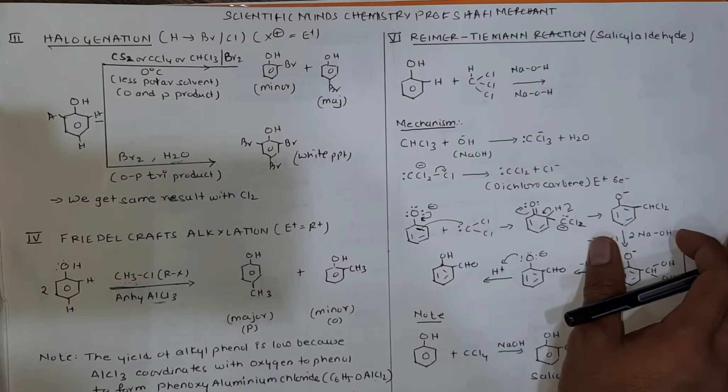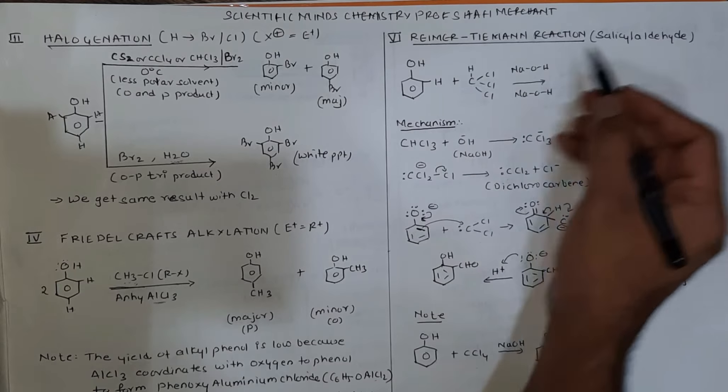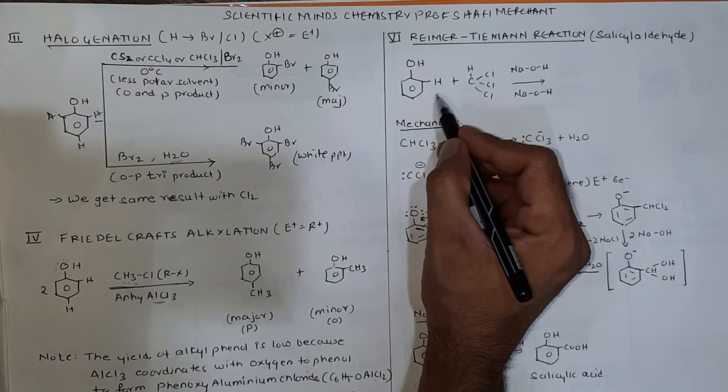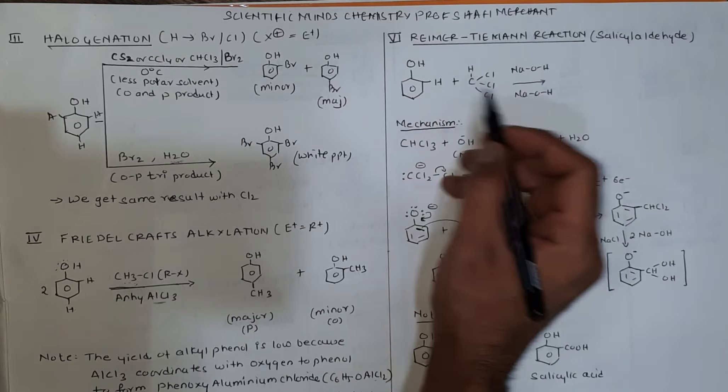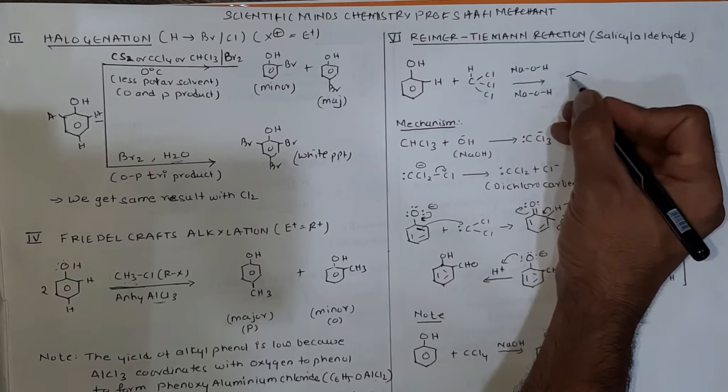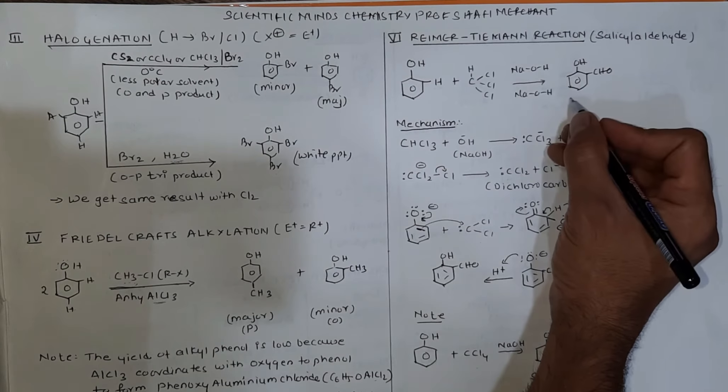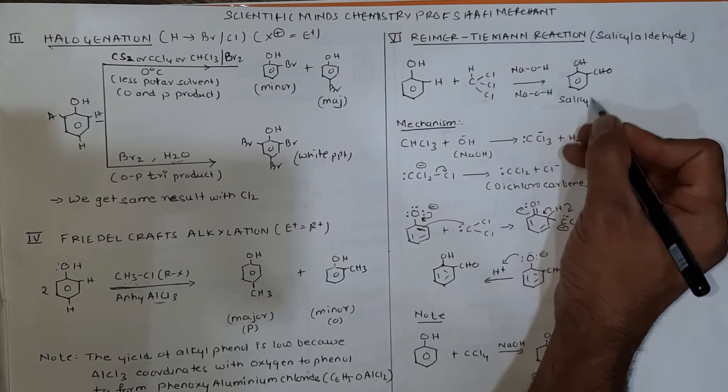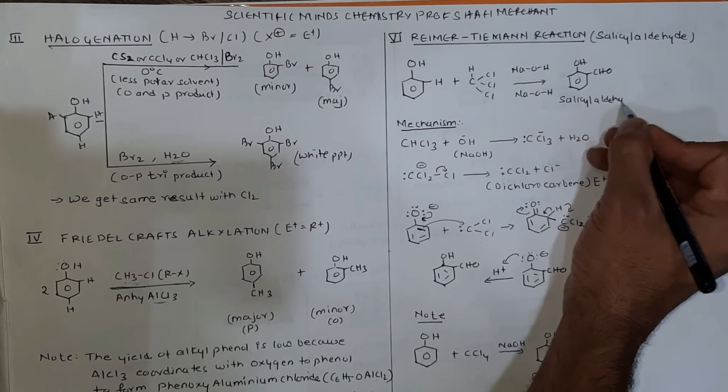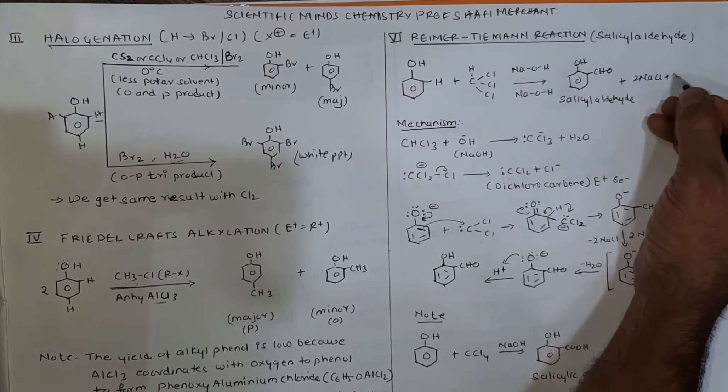In case of Reimer-Tiemann reaction, chloroform is used for preparation of salicylaldehyde. Chloroform reacts with phenol in presence of NaOH. The aldehyde group attaches at the ortho position to form 2-hydroxybenzaldehyde, also called salicylaldehyde, plus NaCl plus H2O.